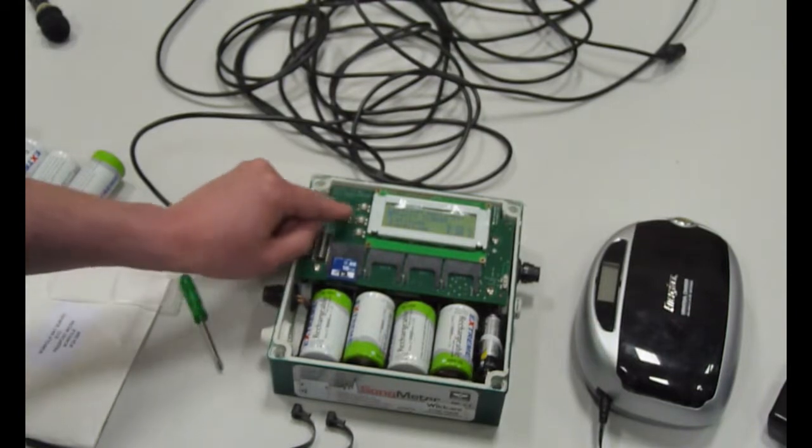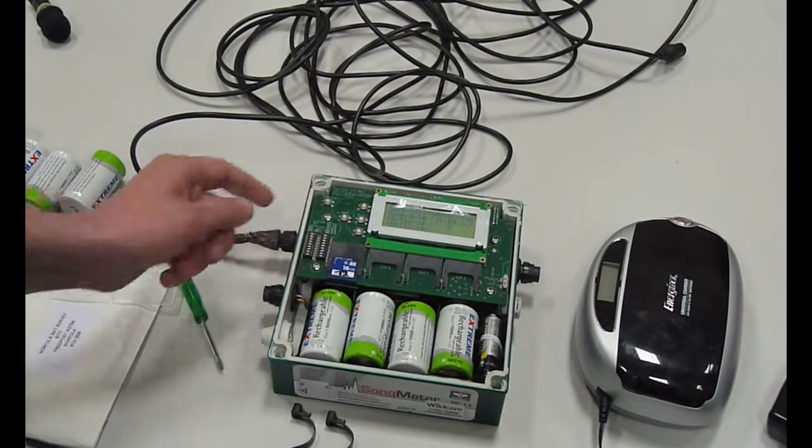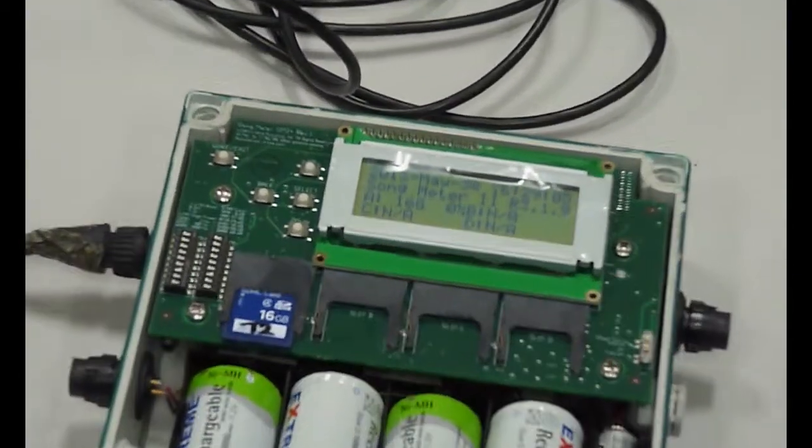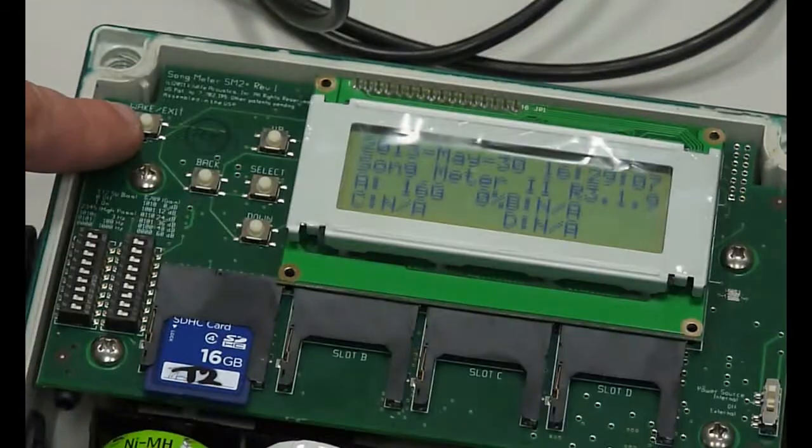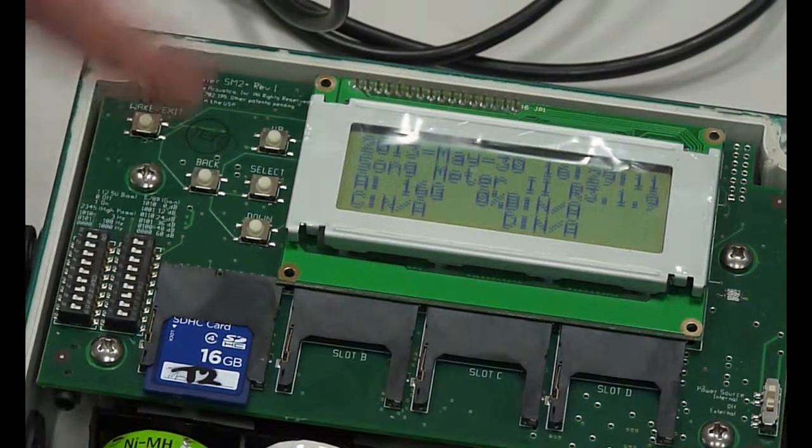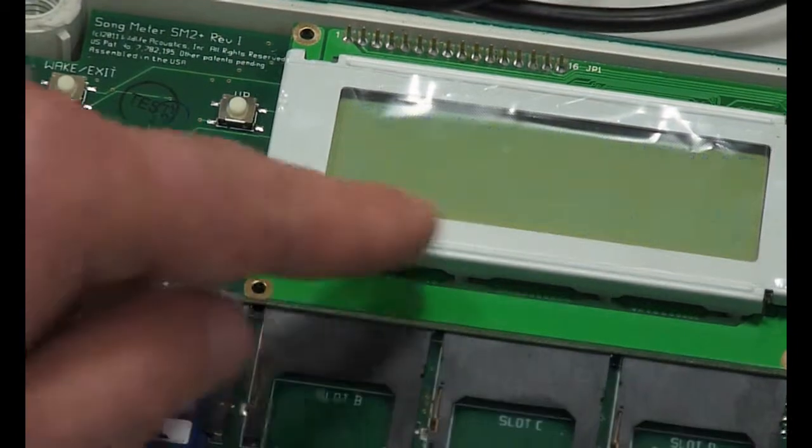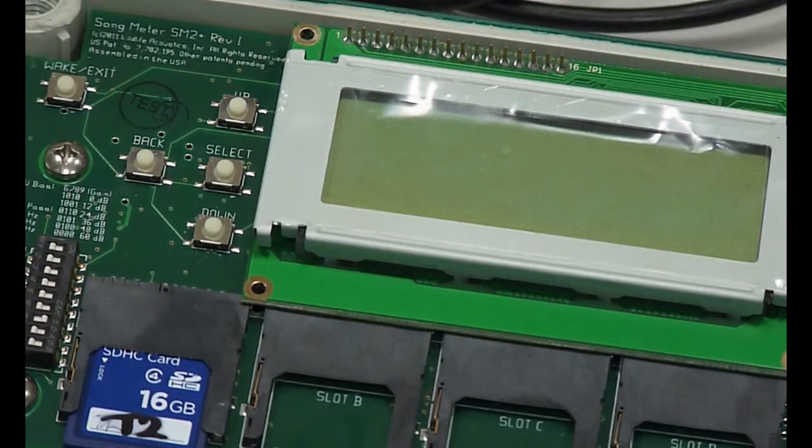When you finish doing that, you click on back to get to the original screen. Then to activate it, at the top here on the left is a button that says wake exit. Click on that and it will quickly say going to sleep until 30th of May 8:30, and that's activated.